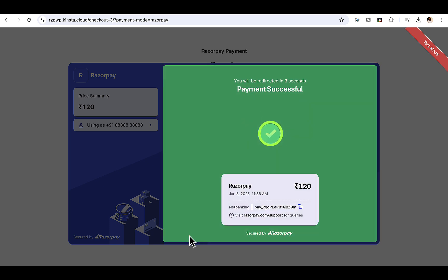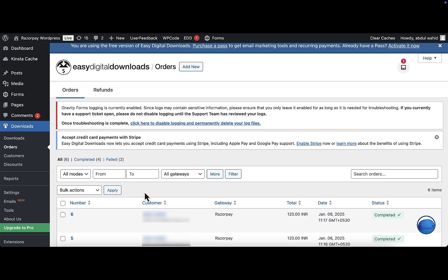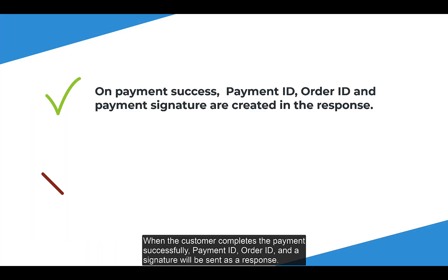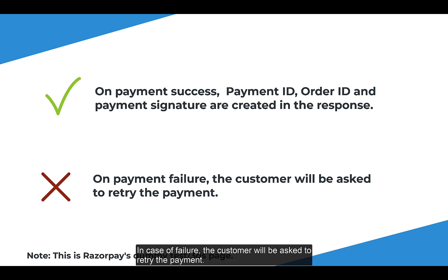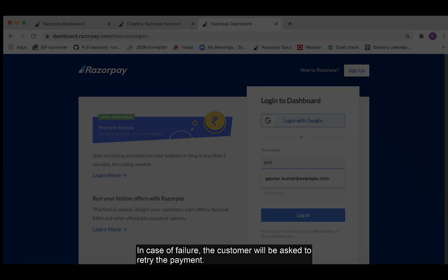Your order is successfully placed. As you can see, the payment transaction appears on the list. When the customer completes the payment successfully, a Payment ID, Order ID, and Signature will be sent as a response. In case of failure, the customer will be asked to retry the payment.